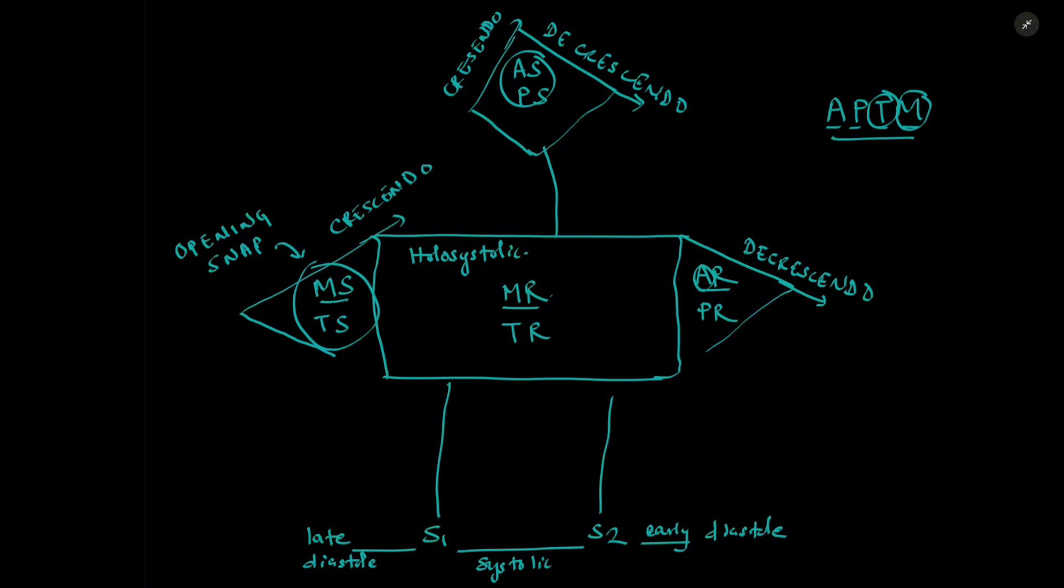And let's add some other murmurs not covered by this murmur man, such as the patent ductus arteriosus, the hypertrophic obstructive cardiomyopathy, the murmur of mitral valve prolapse, ventricular septal defect and atrial septal defect. So this for patent ductus arteriosus would be a continuous murmur across systole and diastole.